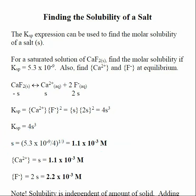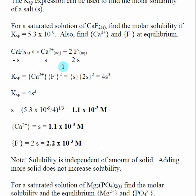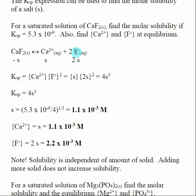Now I look at how the molar solubility relates to the concentration of my species. The concentration of Ca²⁺ equals S, which is 1.1 × 10⁻³ molar. For F⁻, the concentration equals 2S, so I take my calculated S and multiply by two. The concentration of F⁻ is 2.2 × 10⁻³ molar — twice as large as calcium, confirming our earlier assumption.